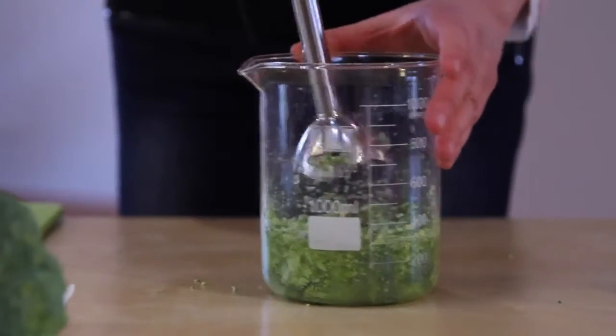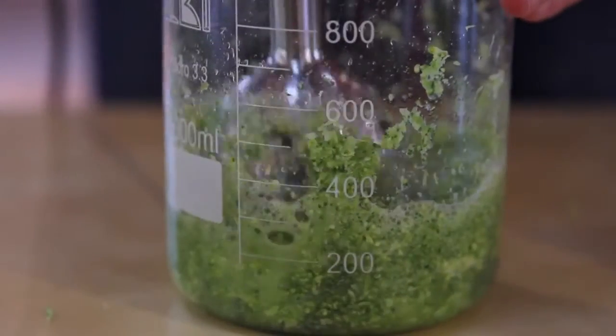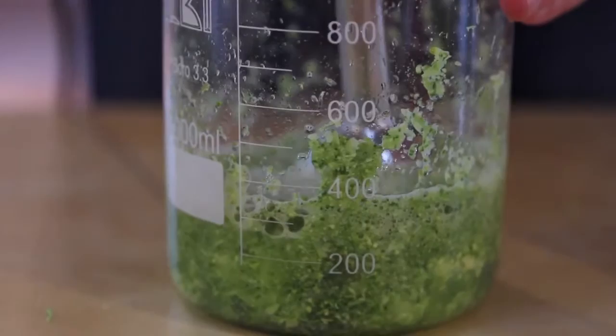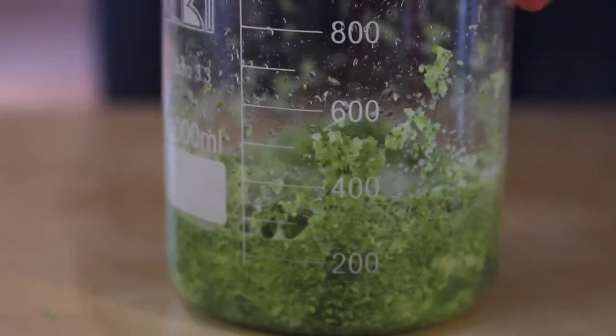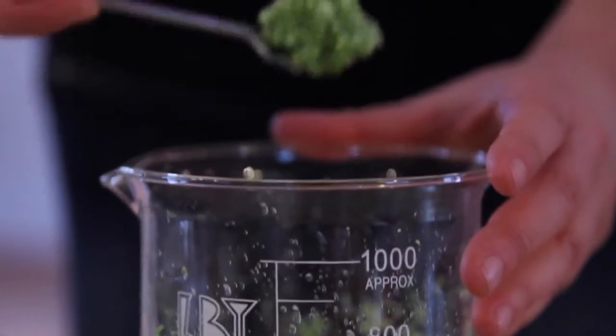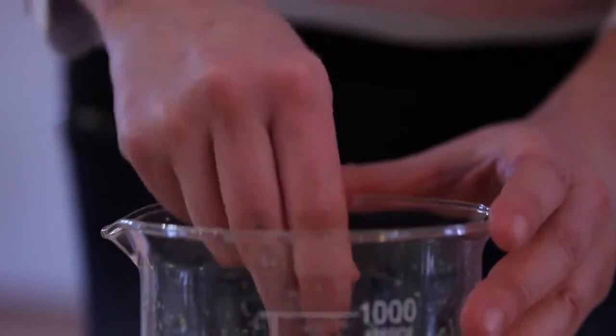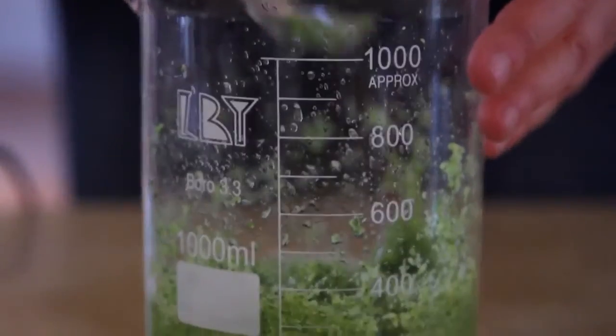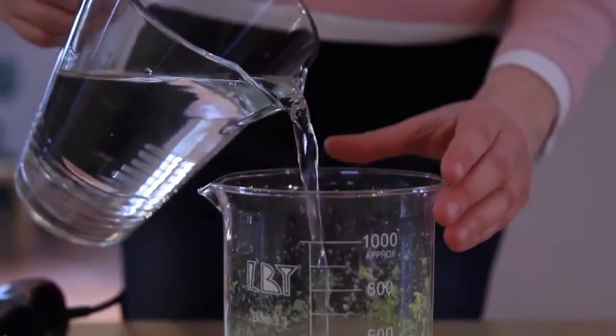You need to break the plant material down to an appropriate degree. After blending for a while, mix everything with a spoon in order to blend those parts at the bottom and then continue blending. At what point have you achieved the required degree of blending? The material must be somewhat broken down because the cell walls must be cut. However, if you blend it too much into little pieces smaller than one millimeter, you may also damage the DNA.